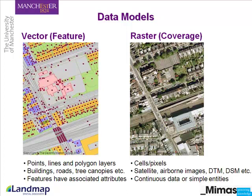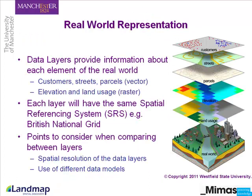The second is the raster data model, sometimes known as coverage data. This contains cells or pixels and represents continuous data or data of simple entities. Examples of raster data include satellite imagery, airborne imagery, digital terrain models, and digital surface models. What we're trying to do is represent the real world using these data layers — each layer represents information about one element of the real world. For example, you have customers, streets, and parcels layers from the vector model, and elevation and land use layers from the raster model.